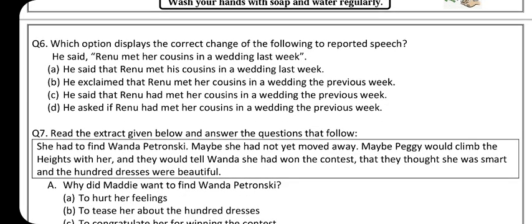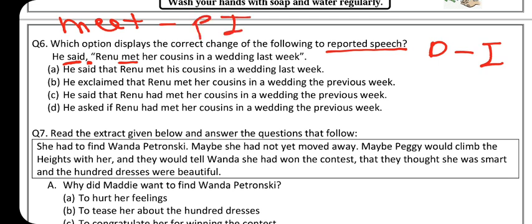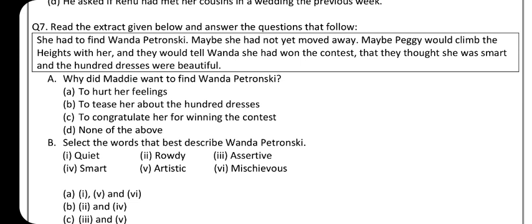Question 6 is based on reported speech — direct to indirect. Rules: if 'said' has no object after it, keep 'said'; replace inverted commas with 'that'; change past indefinite tense to past perfect; change 'last week' to 'the previous week.' Among the options, one uses 'met' and one uses 'had met' — the correct form is past perfect 'had met.' The option with 'said' + 'that' + 'had met' + 'the previous week' is correct.